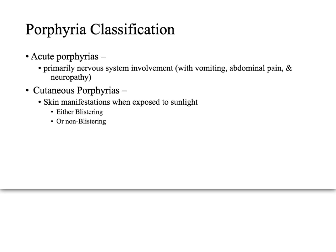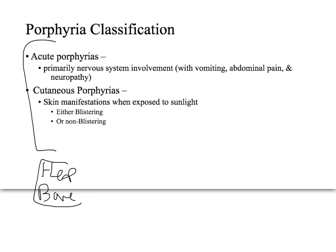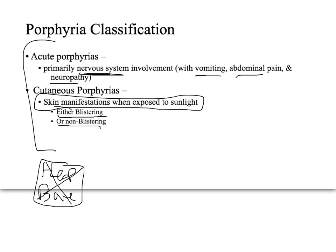Porphyria is classified two different ways. The first way is either acute or cutaneous. Another way of classifying it is by its pathophysiology — either hepatic or in the bone marrow. Looking at clinical presentation, acute porphyrias are primarily nervous system; they're sometimes called neurovisceral, so you get vomiting, abdominal pain, and neuropathy. Cutaneous porphyrias have two subtypes: blistering or non-blistering, but they both have skin involvement — whenever the skin is exposed to sunlight, you get some type of skin changes, and whether that's blistering or non-blistering depends on the subtype.